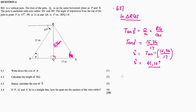Now for the last one, 6.4: if P, Q, and S lie in a straight line, how far apart are the anchors of the wire? I want the distance between P and S. The distance between P and S equals the length of PQ plus the length of QS. QS is given as 17, so I need to calculate PQ using triangle PRQ.